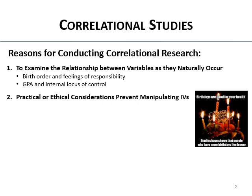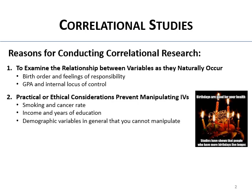Another reason we do correlational studies is for practical or ethical considerations. Because of those considerations, we can't do experimental studies where we actively manipulate the independent variable — we just measure things as they are and correlate them. Smoking and cancer rates, for example: we're not going to make people smoke randomly. We just look at the naturally occurring relationship. Similarly, income and years of education — you can't assign people to different income levels or education levels, so you measure them and calculate a correlation.